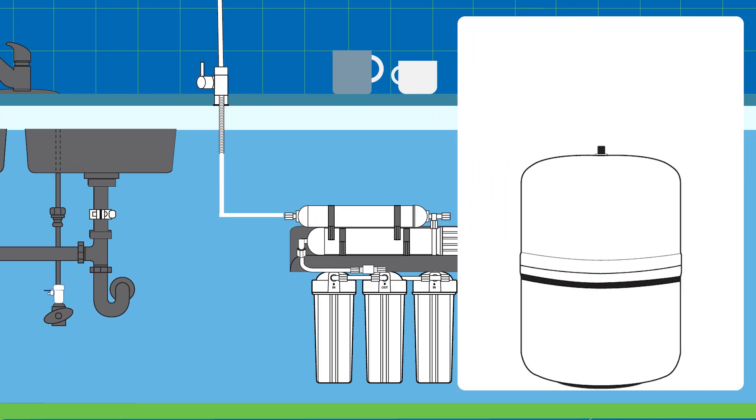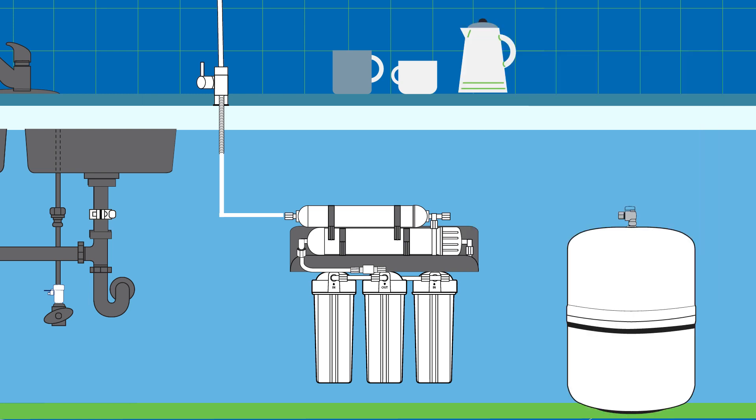Let's install the RO storage tank. Wrap the stainless steel thread connection on top of the storage tank with Teflon tape. Hand-tighten the tank ball valve to the stainless steel connection. Place the tank in a vertical position in the cabinet. Measure the tube from the RO storage tank ball valve to the post-carbon polishing filter.